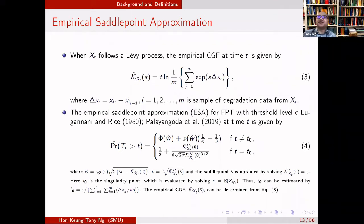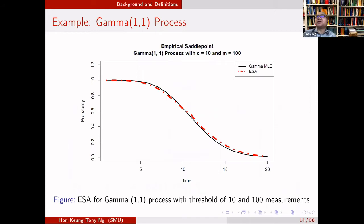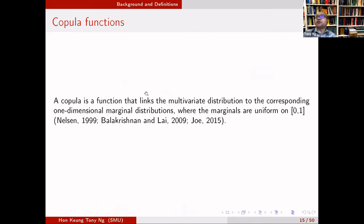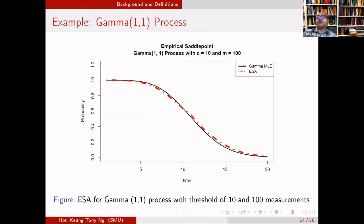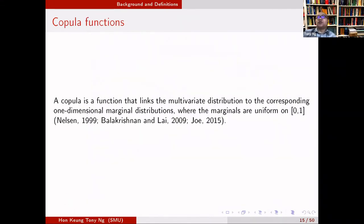This is an example: we simulate data from a gamma process and use the empirical saddlepoint approximation (ESPA) as the non-parametric approach. We find the approximation does well — it is much better than misspecifying the distribution. That handles the one-dimensional case. Now I'll move to how we model the dependency between two degradation processes.